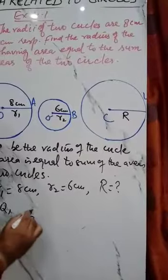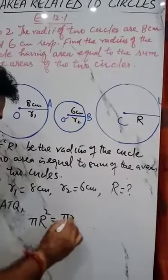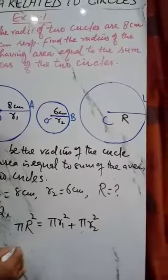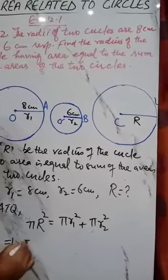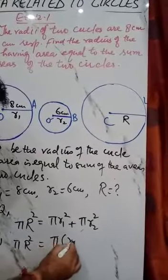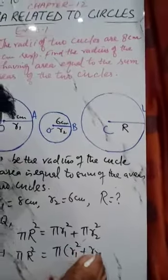equals πr1² plus πr2². So we can take π common from both sides: r² = r1² + r2².